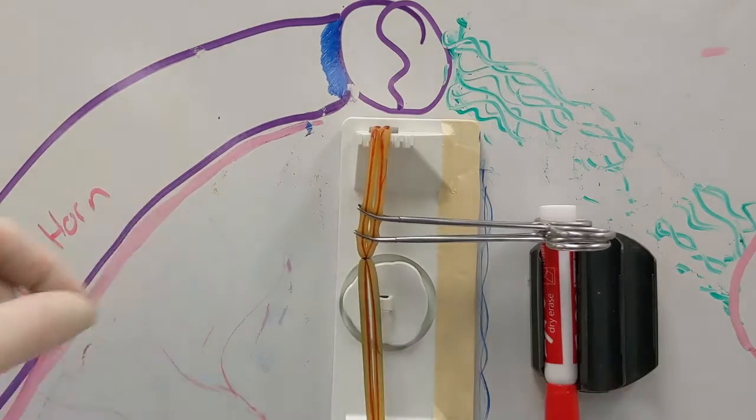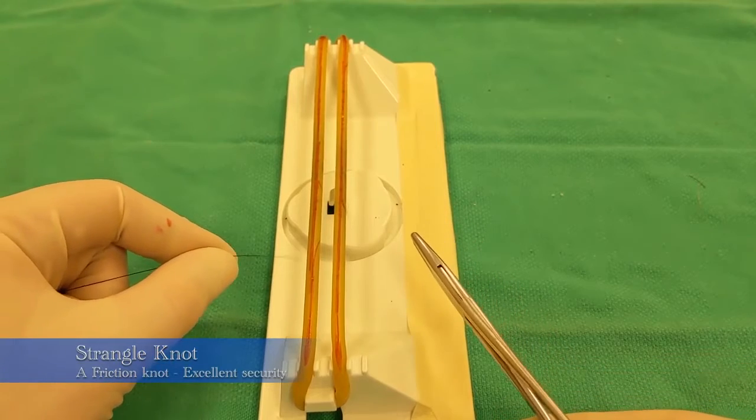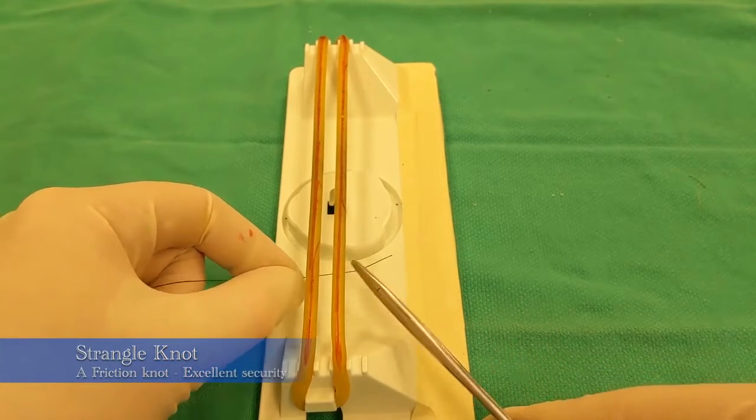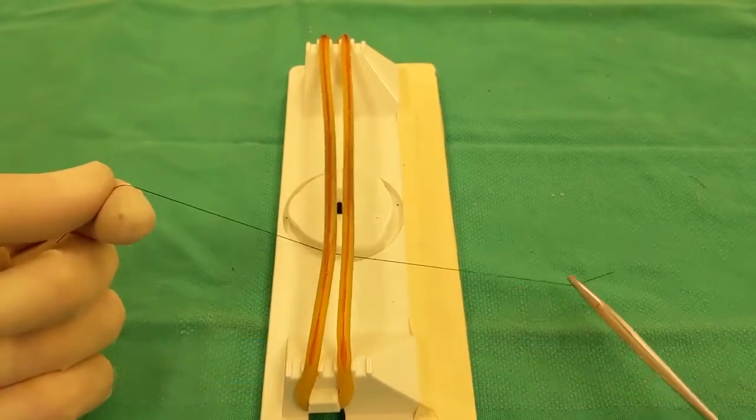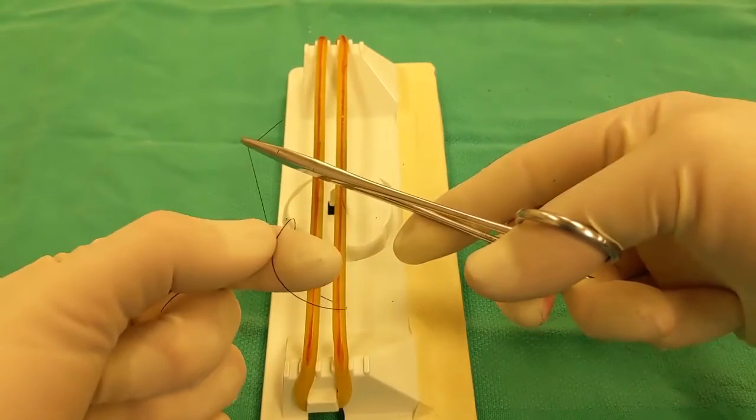Now we'll teach the strangle knot. The strangle knot also has two wraps around the pedicle. In this example, it's wrapped around from the back side and over, and that suture strand is crossed on the finger to make an X. This X should be maintained for the knot.